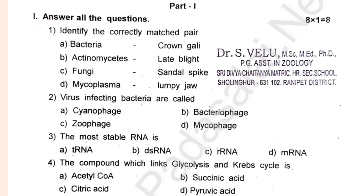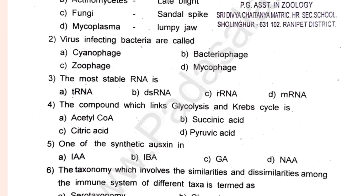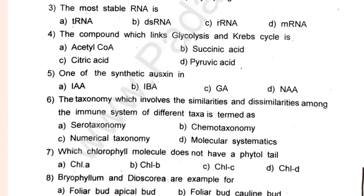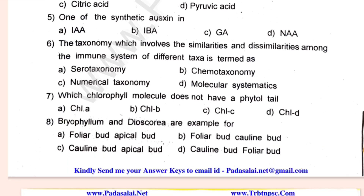Identify the correctly matched: where virus infecting bacteria are called; what is the most stable RNA. The compound which links glycolysis and Krebs cycle; one of the synthetic auxins. Which chlorophyll molecule does not have a phytol tail?